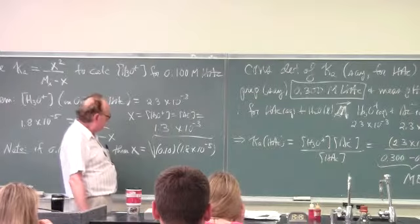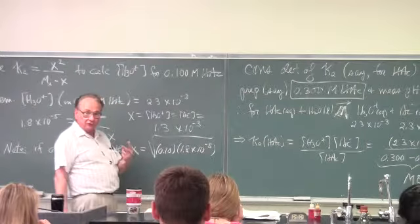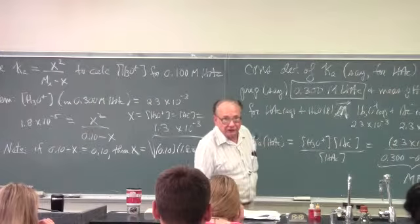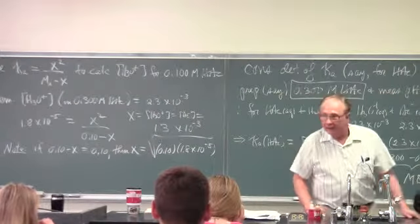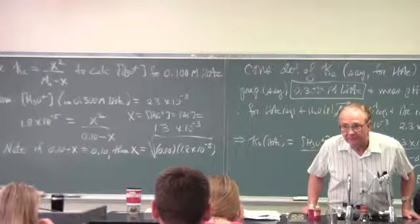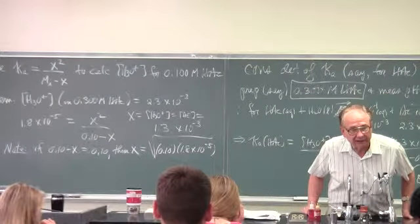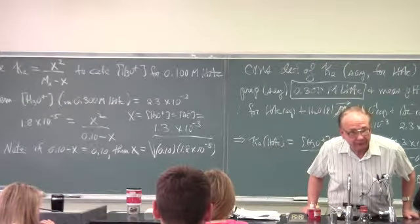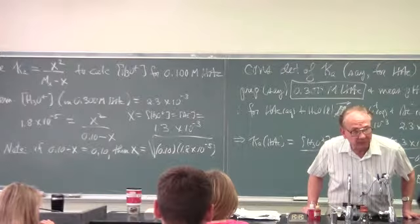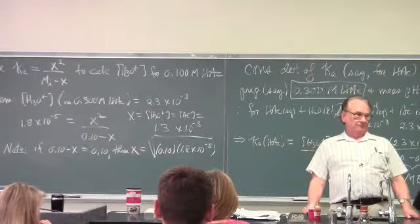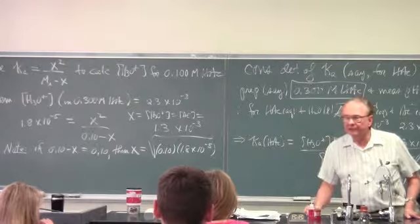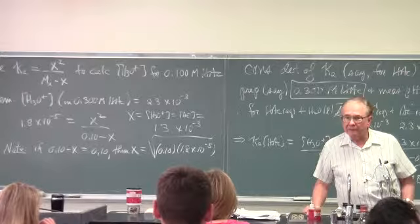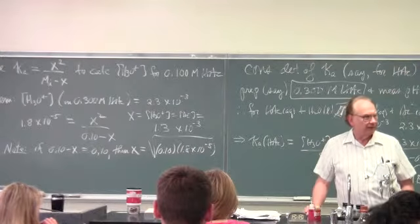And you will find out if you now use the button calculator, 1.3 times 10 to the minus 3 is the square root of 2 sig figs of 1.8 times 10 to the minus 6. After all, what's 13 squared? What is it? 169. What's 14 squared? Did you do this stuff in high school? Grade school?